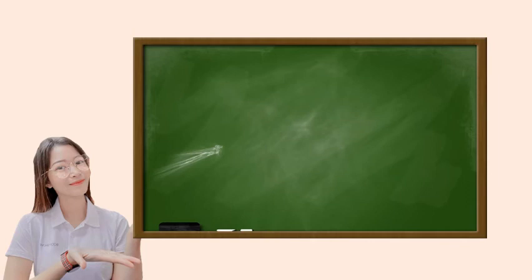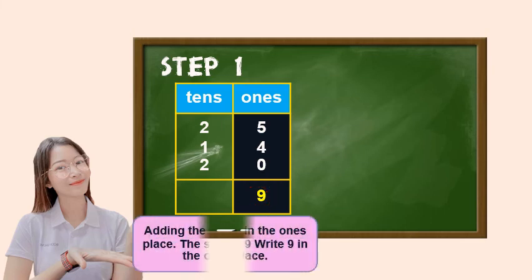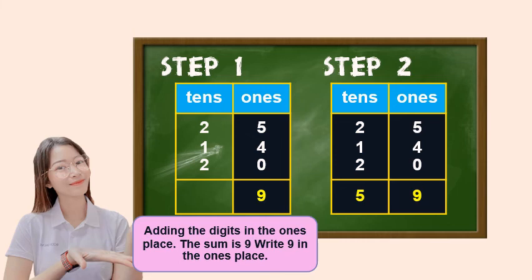We can also add three numbers using the column method. We place them in the tens and ones places: twenty-five, fourteen, and twenty. Step one: add the ones place first — five plus four plus zero equals nine. Write nine in the ones place. Step two: add the digits in the tens place — two plus one plus two equals five. Write five in the tens place. The answer is fifty-nine.